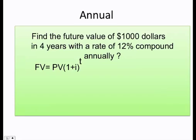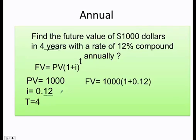How do we do it manually? Just follow the formula. The present value is $1000, the interest is 0.12. Remember, when we use this in the calculator, we need to do 12 divided by 100, and that gives me 0.12. t equals 4 because we have 4 years.